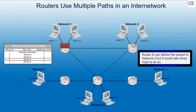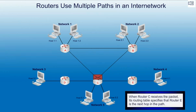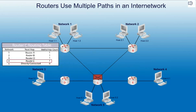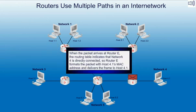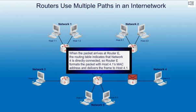Router B can deliver the packet to network 4, but it would take three hops to do so. When router C receives the packet, its routing table specifies that router E is the next hop in the path. When the packet arrives at router E, the routing table indicates that network 4 is directly connected, so router E formats the packet with host 4.1's MAC address and delivers the frame to host 4.1.